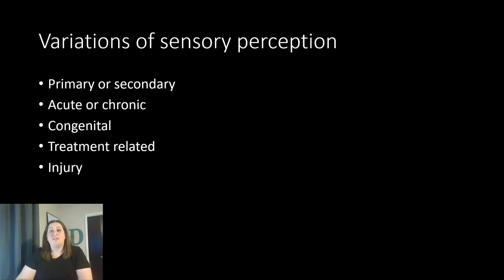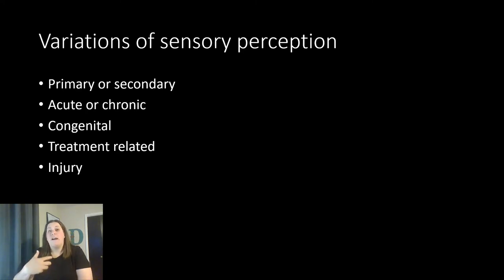A secondary issue causes a variation or problem with your sensory perception. It could also be acute — short term — like with COVID, where once recovered your taste buds and olfactory nerve should regain their abilities. In other cases it's a chronic problem; once it happens it doesn't get fixed, or it could be a degenerative issue where it gets worse over time, as we often see with hearing and vision as we age.